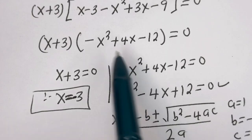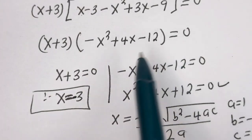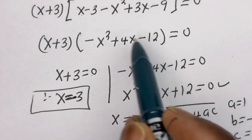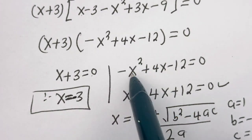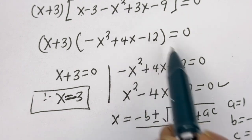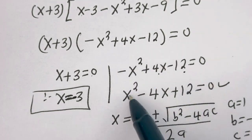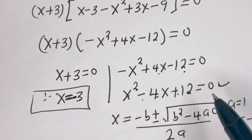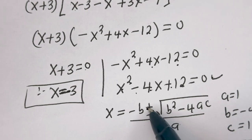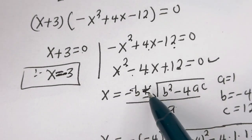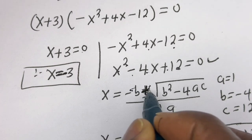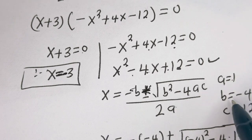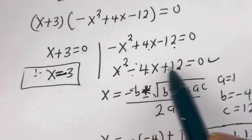From here there are two cases. The first case is s plus 3 is equal to 0, therefore s is equal to minus 3. The second case is minus s squared plus 4s minus 12 is equal to 0, which we rewrite as s squared minus 4s plus 12 is equal to 0. This is a quadratic equation solved using the quadratic formula, where A equals 1, B equals minus 4, and C equals 12.